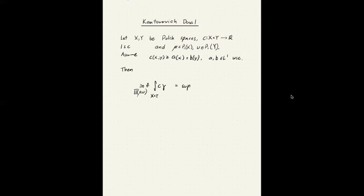And the dual problem here, we're optimizing over functions, phi and psi. Phi is going to be a function on X and psi a function on Y. They should both be L1 with respect to mu and nu respectively. And they should satisfy the following.